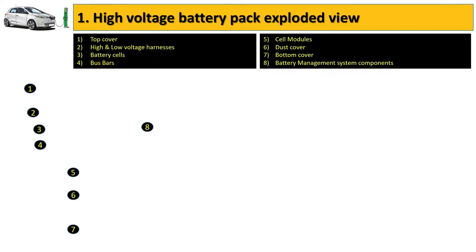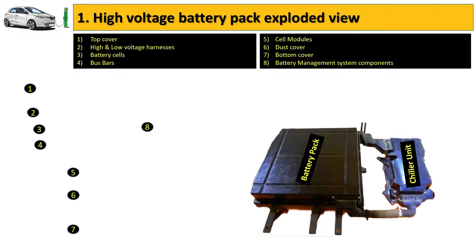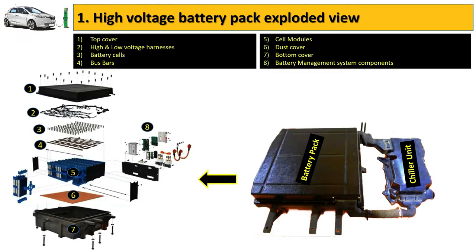Number 1: High Voltage Battery Pack Exploded View. Here we can see the battery pack assembly with the chiller unit. This is the battery pack and chiller unit assembly taken from the Tata Tigor EV. When we open up that battery pack, we can see these 8 major components: top cover, high and low voltage harnesses, battery cells, bus bars, cell modules, dust cover, bottom cover, and battery management system components. Detailed working of these listed components can be seen in upcoming videos.